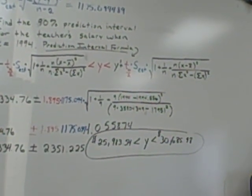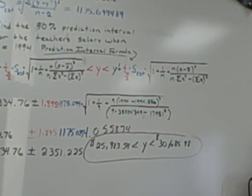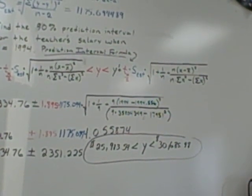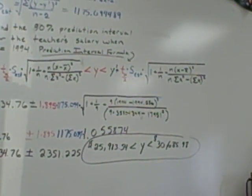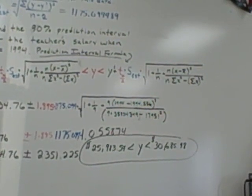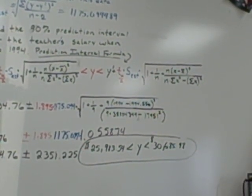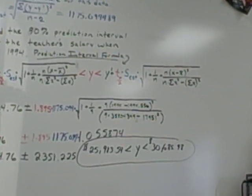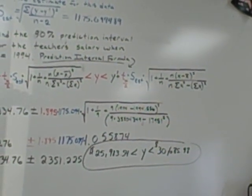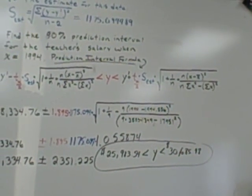Will it happen every time? No. 10% of the time, the actual value won't fall in the interval. Now, of course, if we did a 95% prediction interval, then our actual value would fall in the interval 95% of the time. So it comes down to how sure you want to be, how confident you want to be in your prediction.